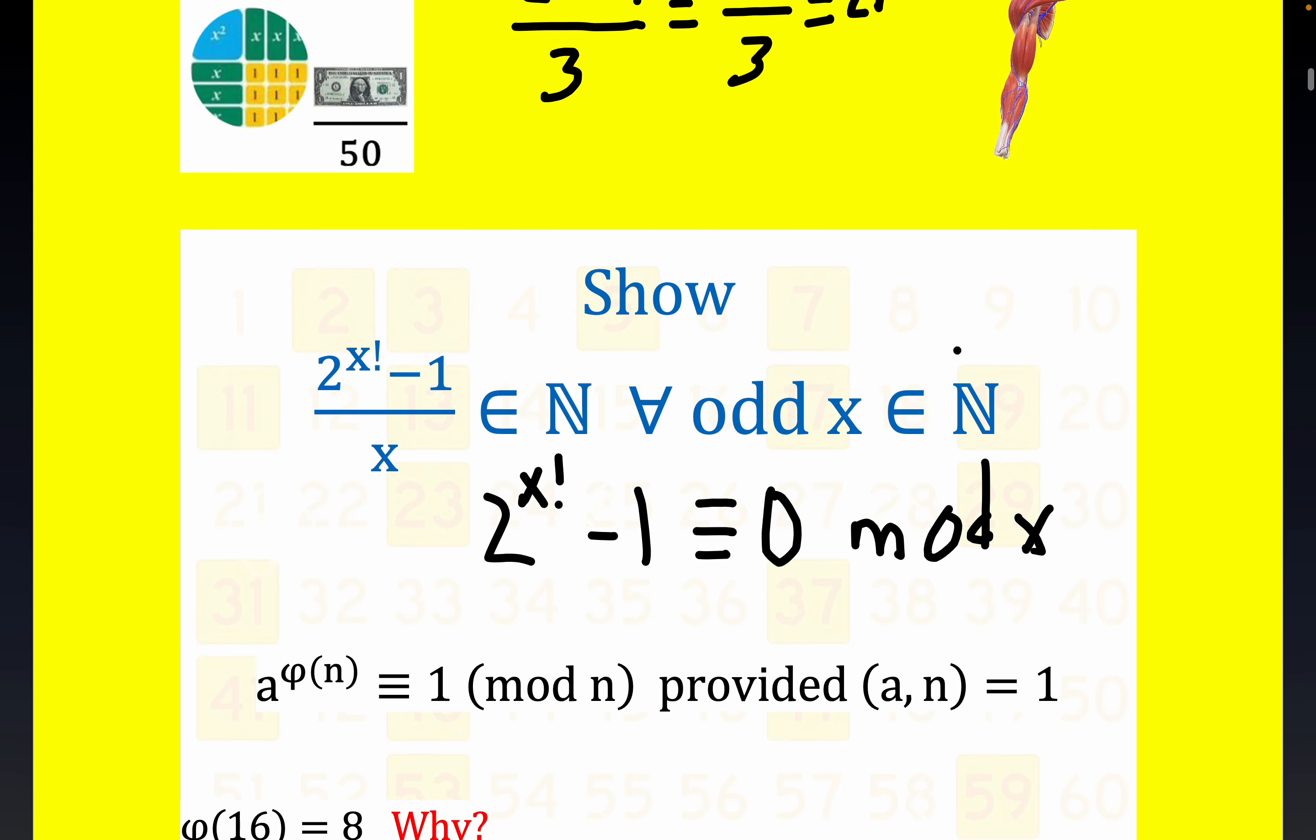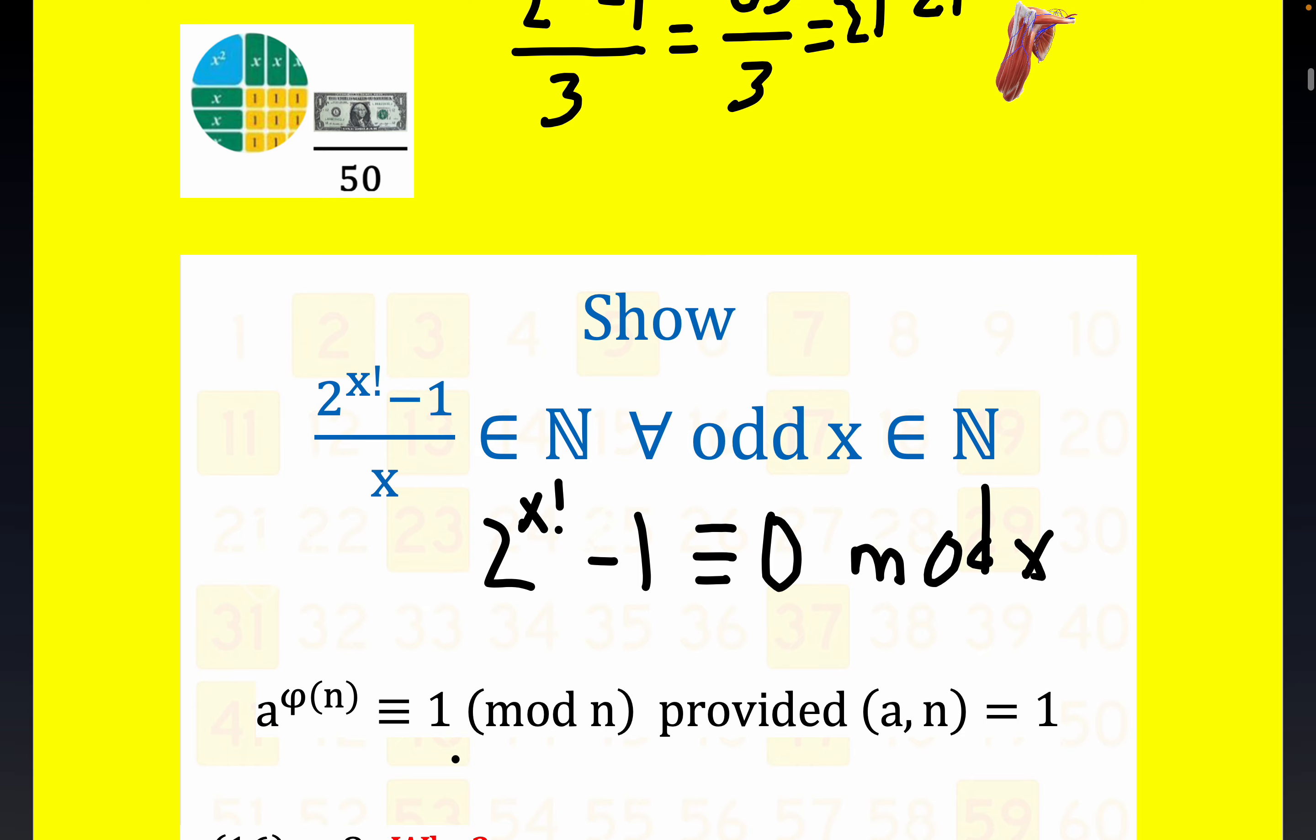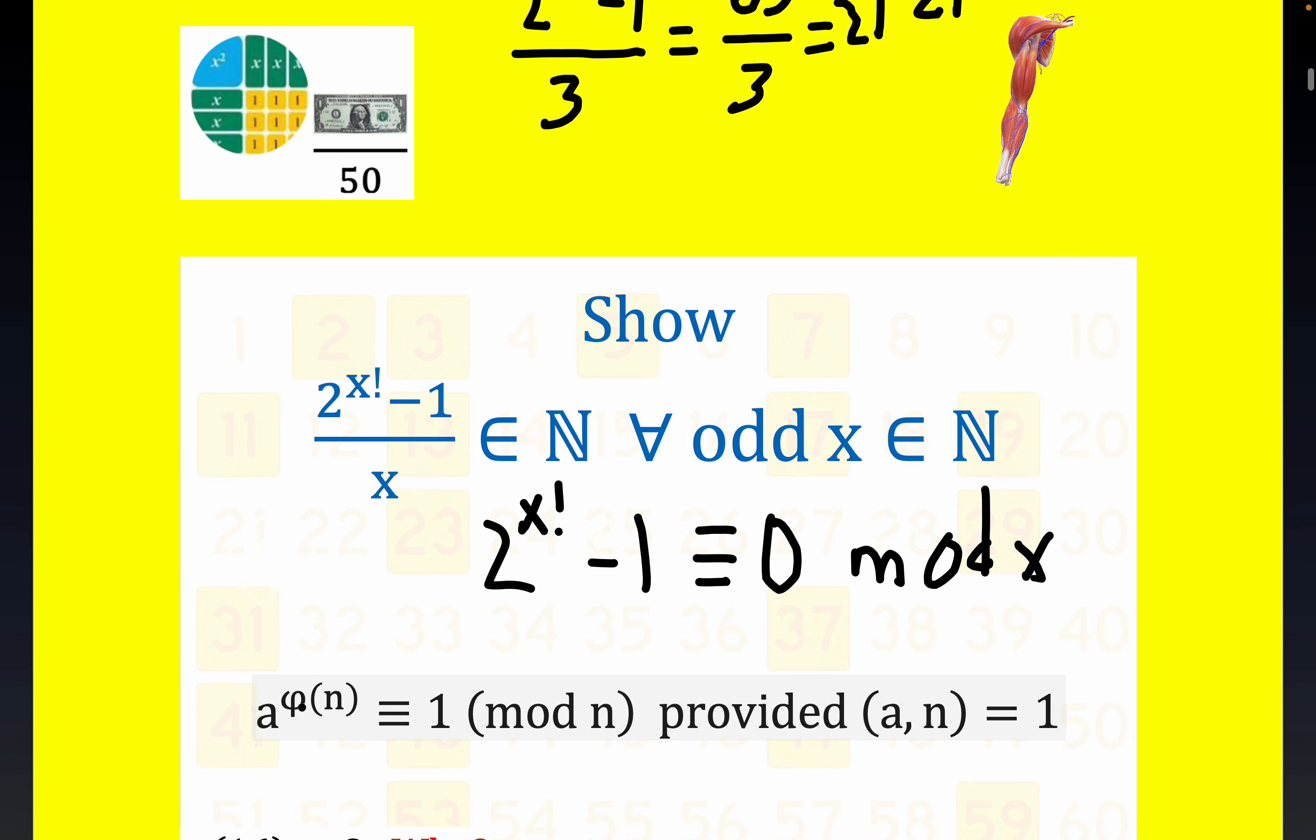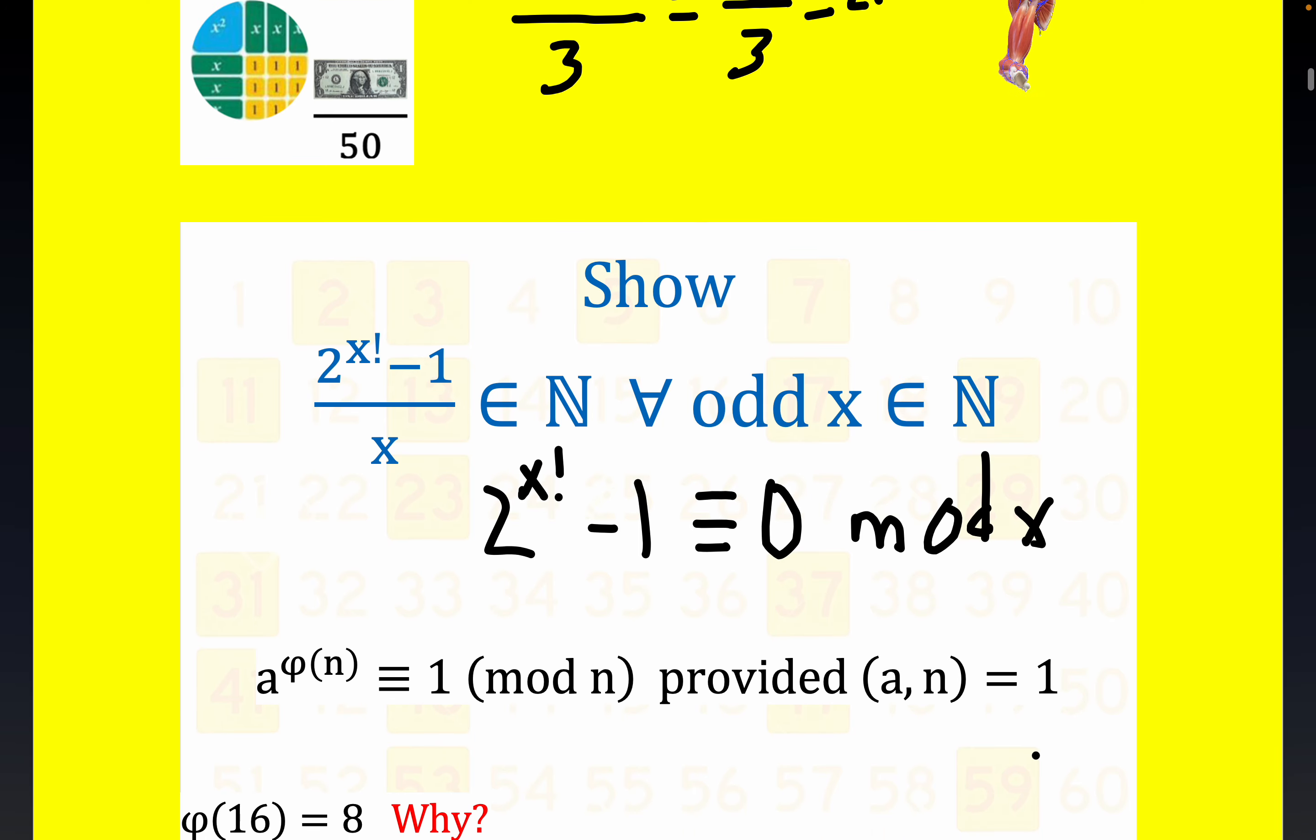Now, there's a result. I won't spend too much time on it, but it's called the Euler-Totient function. And it says a to the φ of n is congruent to 1 mod n, provided a and n are relatively prime. Now, the a and the n actually are going to be the 2 and x will actually be the roles for these values. And so, you can see why we needed x to be odd. Because 2 and any odd number are relatively prime or co-prime.